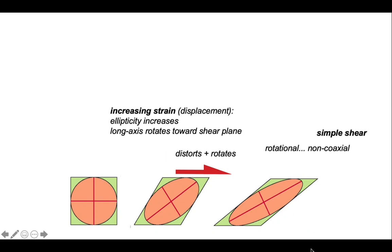Therefore, the intensity of a shape fabric, and it rotates the long axis of the ellipse, therefore the orientation of the shape fabric towards the shear plane.